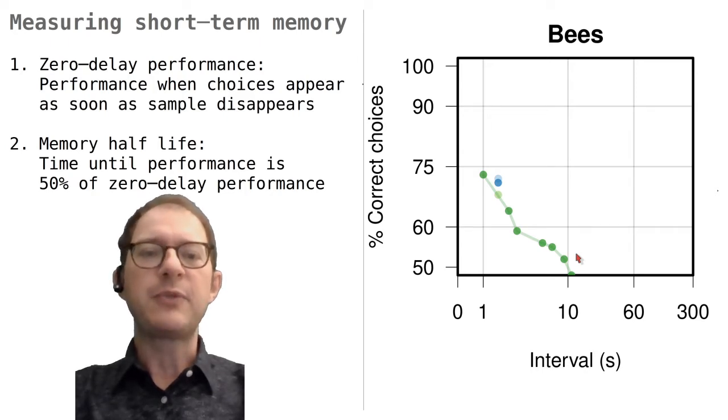We can quantify the duration of the memory by looking for the point where the initial performance has worsened halfway towards chance levels. In the case of bees, we see this halfway point is about 60% correct, which is reached for a delay of about 3-4 seconds. Because bees are now half as good as they were with the shortest delay, we say the half-life for their memories is 3-4 seconds. We can also see that the bees didn't seem to remember anything after about 10 seconds, at which point they had dropped to chance level.